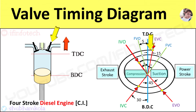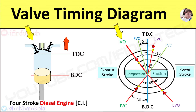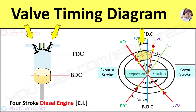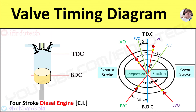The inlet valve opens at an angle of 25 degrees before the TDC position of the piston for proper intake of fresh air, which also provides cleaning of remaining combustion residuals in the combustion chamber. So there is a valve overlap of 30 degrees between the inlet and exhaust valve before the new cycle starts.